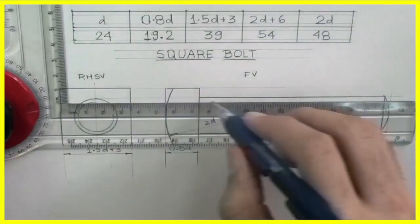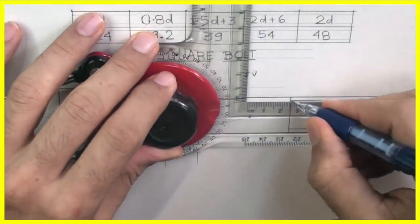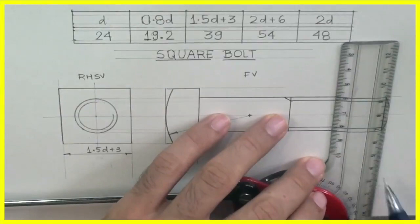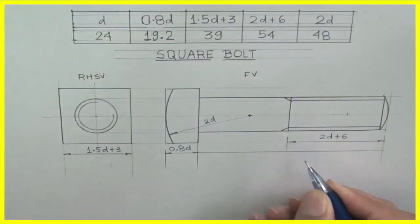Now threading length is 2d plus 6. So I will take 0.8d projection, I will mark 2d plus 6 and I will draw runoff angle. See shank length 2d plus 6. I can do dimensioning.